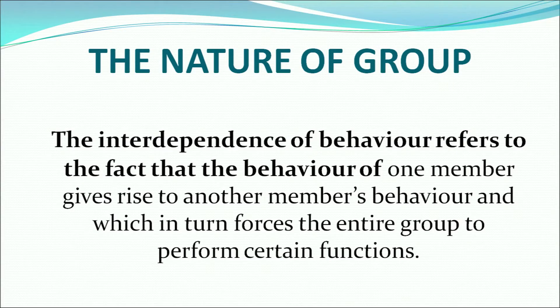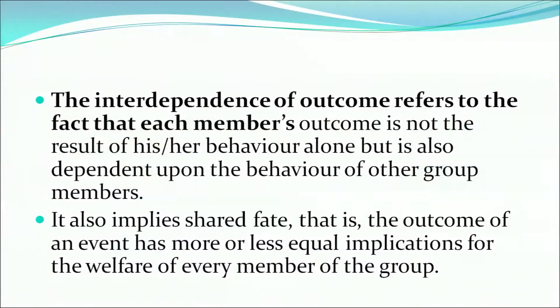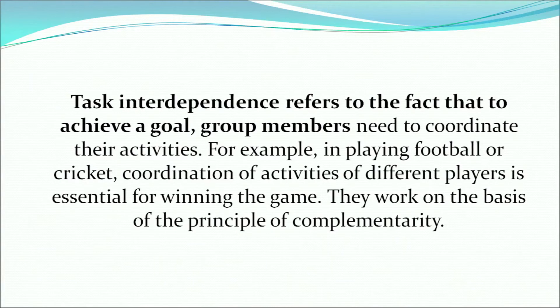The interdependence of behavior refers to the fact that the behavior of one member gives rise to another member's behavior, which in turn forces the entire group to perform certain functions. The interdependence of outcomes refers to the fact that each member's outcome is not the result of his or her behavior alone but is also dependent upon the behavior of other members. It also implies shared fate — that is, the outcome of an event has more or less equal implications for the welfare of every member of the group. Task interdependence refers to the fact that to achieve a goal, group members need to coordinate their activities. For example, in playing football or cricket, coordination of activities of different players is essential for winning the game. They work on the basis of the principle of complementarity.